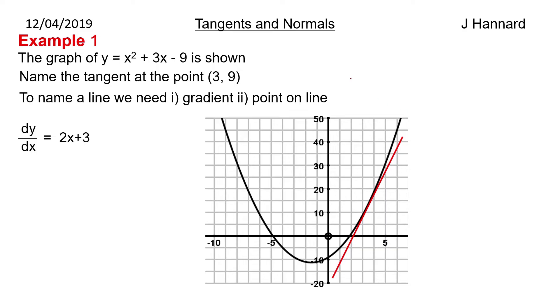We are given a point (3, 9). So the gradient at that point is when you plug x = 3 into dy/dx. So we get 9 because it's 2 times 3 plus 3, which is 9. So we now have our point and our gradient.